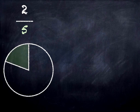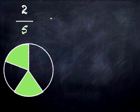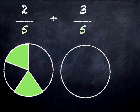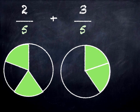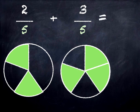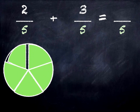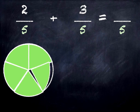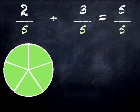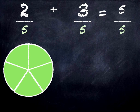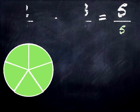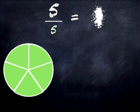What about this one? Two fifths plus three fifths is how many fifths? We'll put them all into the one circle and then we can see that we have five fifths. So the sum we've done with the numerators is two plus three equals five. Remember, the denominators always stay the same. Now we know that five fifths is the same as one.